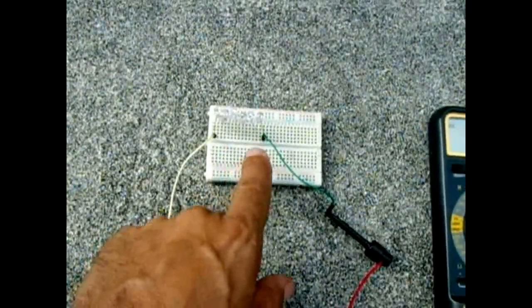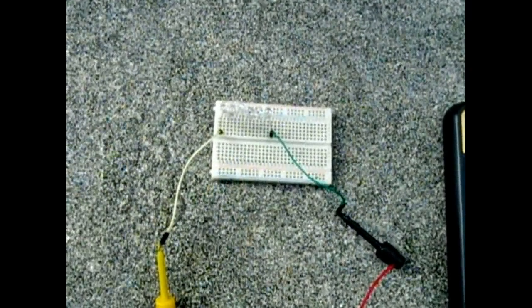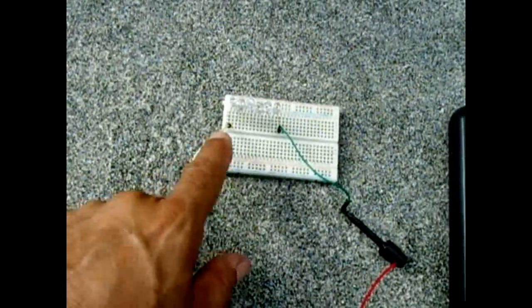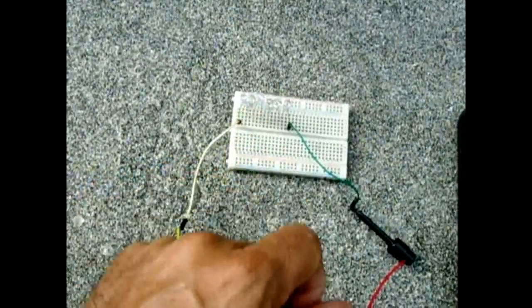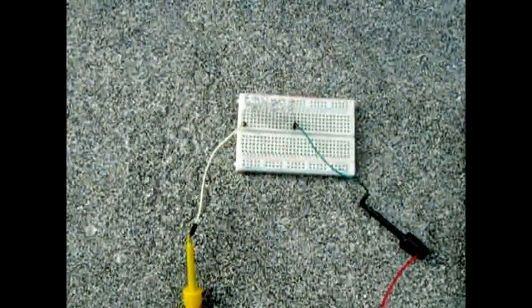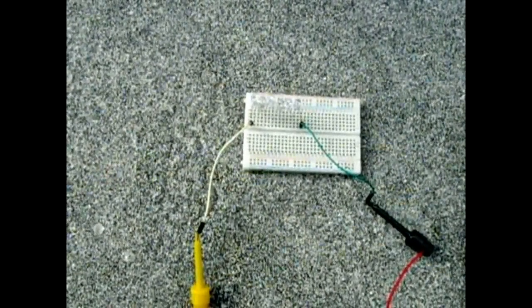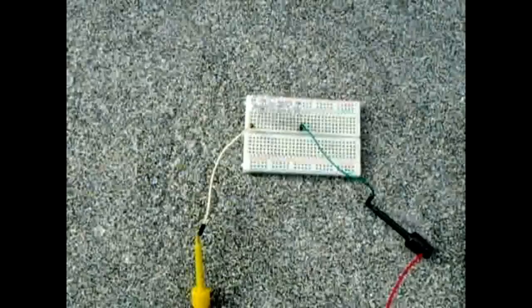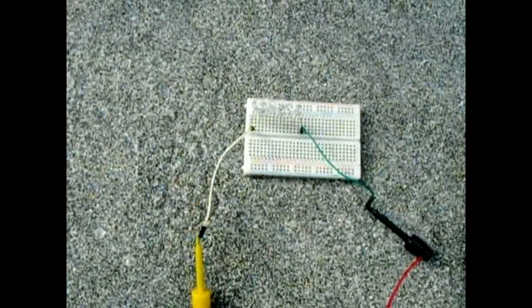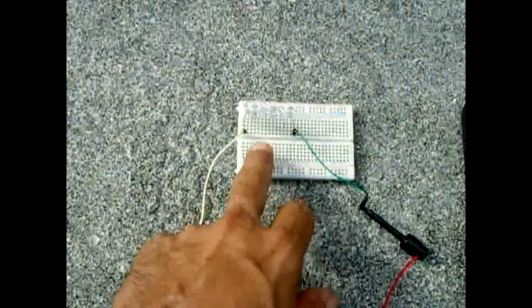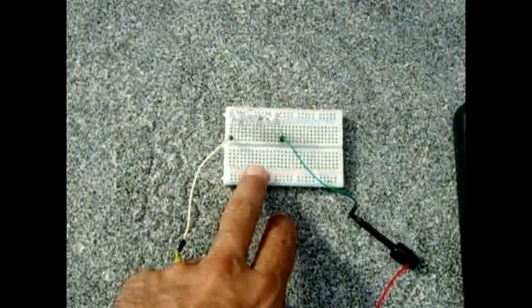It puts out around 1.3 to 1.45 volts when light is shined directly into the LED and it puts out a small current of around 10 to 20 microamps. Now since I saw no one else online try it, I thought of using an even better LED and that is the infrared.